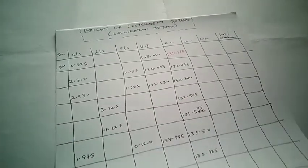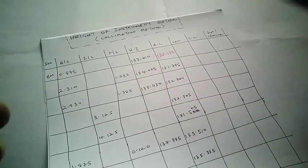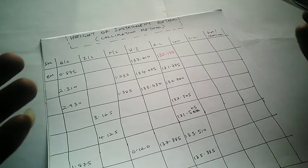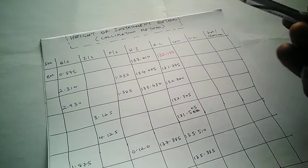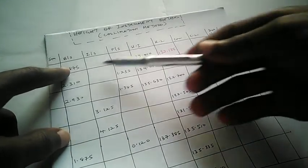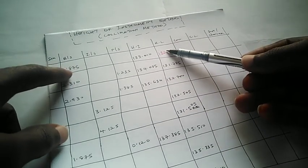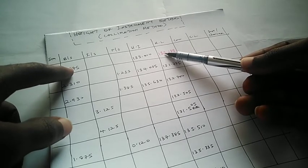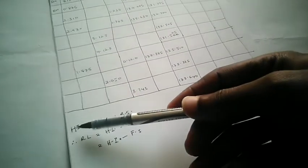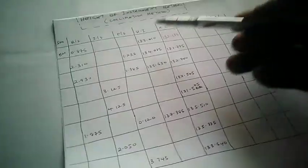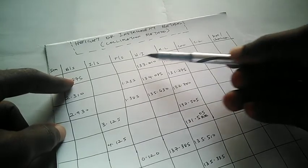The implication of these formulae: when the instrument is set up, the first observation is your backsight and the last observation before you move the instrument is your foresight. On setting up the instrument and making an observation to a point — your backsight — the height of that instrument is the reduced level of that point plus the backsight. So the height of instrument for that setup equals the reduced level plus the backsight reading.